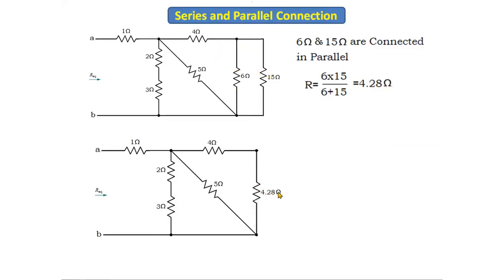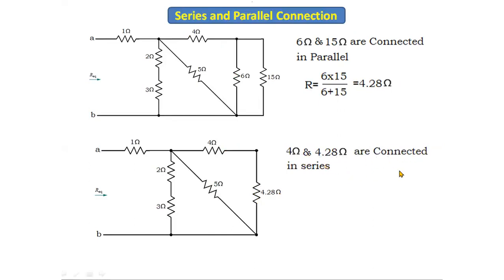Now the 4 ohm and 4.28 ohm resistors are connected in series. Using the series formula, R = 4 + 4.28 = 8.28 ohms. We replace these two resistors with 8.28 ohms.